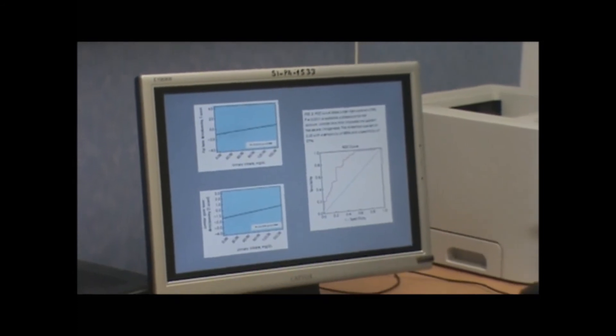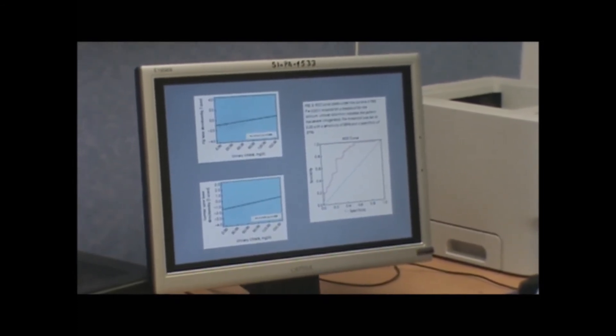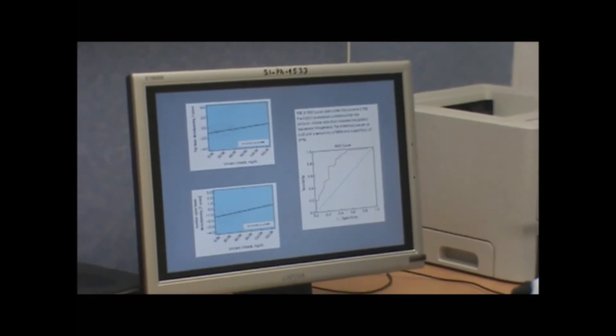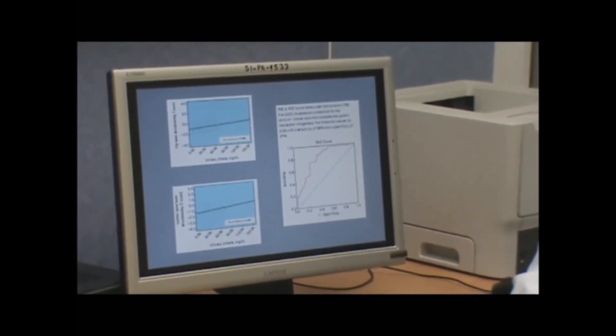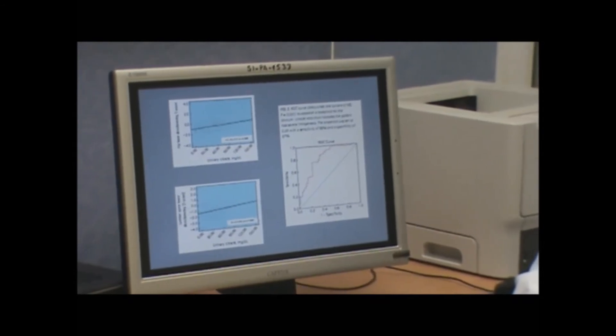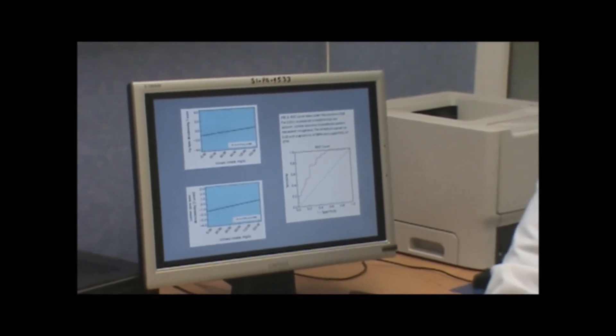We can detect a patient with severe lithogenic activity with a sensitivity of 88% if they present a level of calcium citrate ratio higher than 0.25, as we observed in this ROC curve.